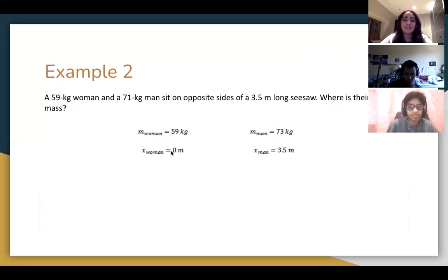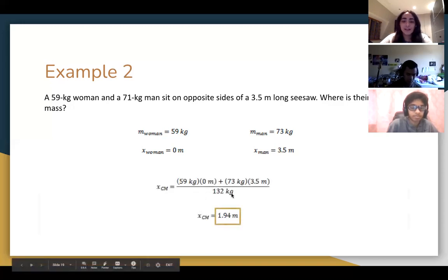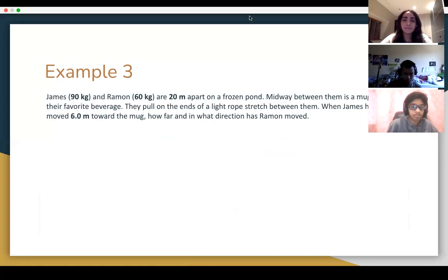Of course, you can just exchange these two because all we know is that they're on opposite sides. As long as you really understand where the direction is, if you say the position to the right or to the left, it will be fine. And then you can put the numbers in. This should be 71. And then you'll get 1.94 meters.